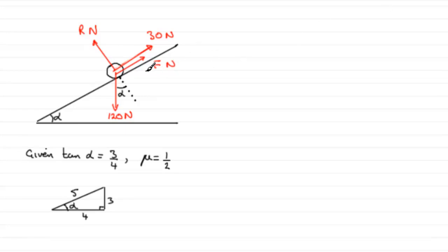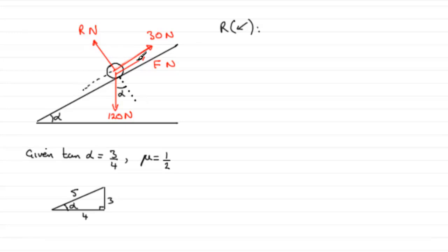Let's resolve down the plane. R won't have any effect in this direction because it's perpendicular. But the 120 newtons — part of it does act down the plane. We can split the 120 newtons into two components: one into the plane and one down the plane. The one into the plane has no effect because it's perpendicular to this direction, but the one down the plane acts in the positive sense. It would be 120 sine alpha, which is the effective force down the plane coming from the weight.